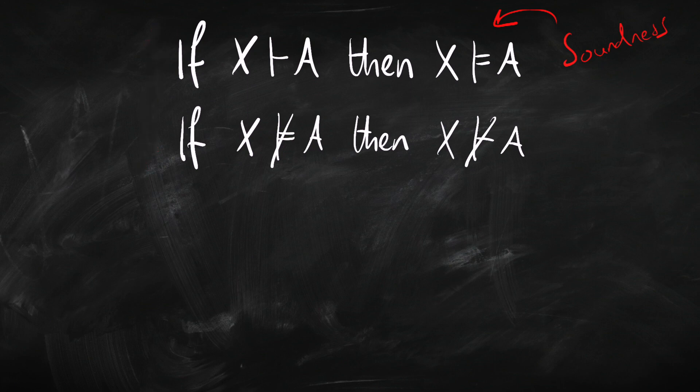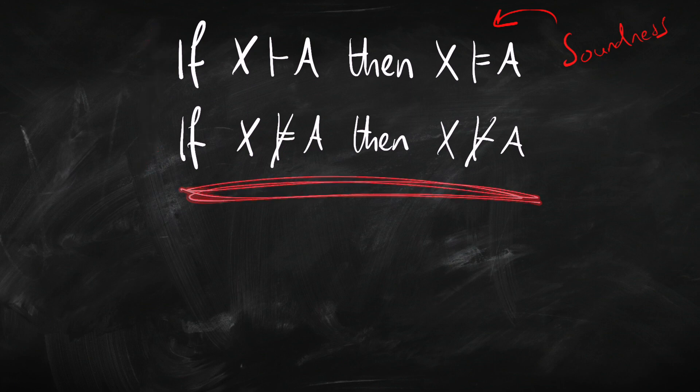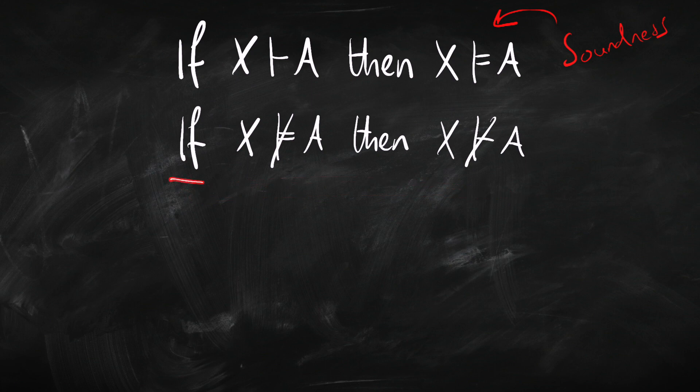It turns out that it's much easier to prove this contrapositive form of soundness. The same holds for completeness: if we're trying to prove completeness — that is, if we've got a genuine entailment then we can prove it — what we're going to want to do is prove the contrapositive, which says: if we can't prove something, then it's not a genuine entailment.